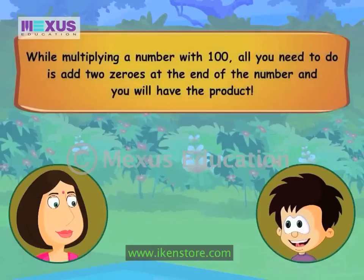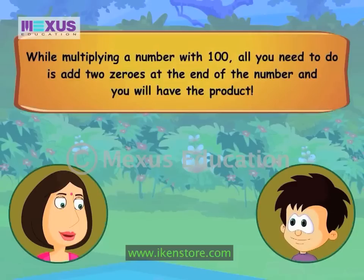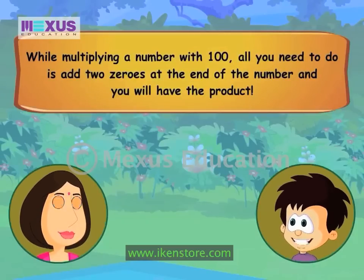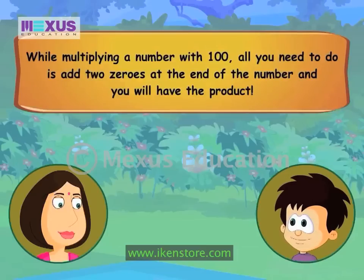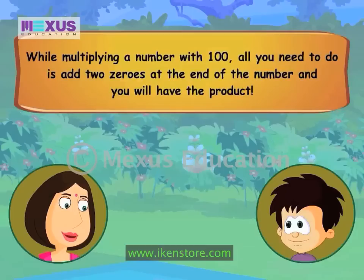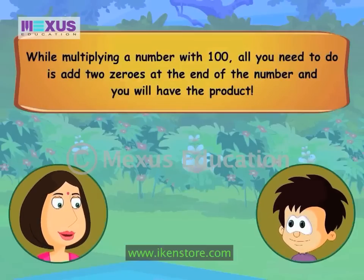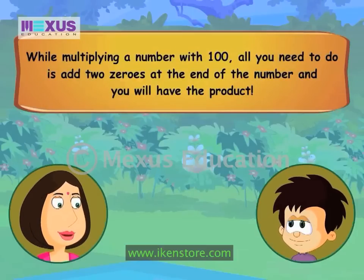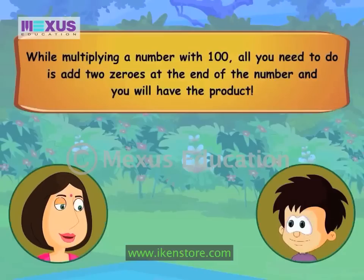So mom, what if I multiplied a number by 100? Its value would get increased by 100. So just like multiplication with 10, I would add zeros at the end to get the answer? Yes. While multiplying a number with 100, add two zeros at the end of the number to get the product.